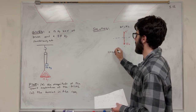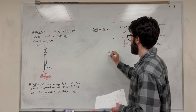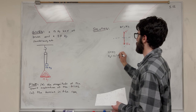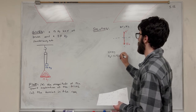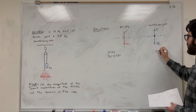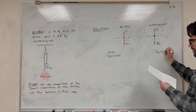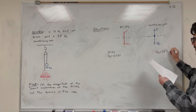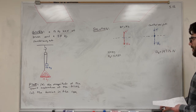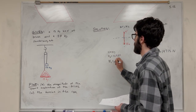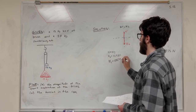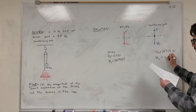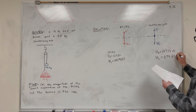Weight equals mass times gravity. The weight of the bricks is 15 kilograms times 9.81, which gives 147.15 newtons. The weight of the counterbalance is 28 times 9.81, which gives 274.68 newtons. Those are two values we'll definitely need.